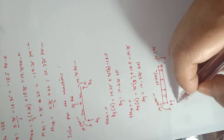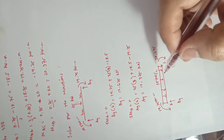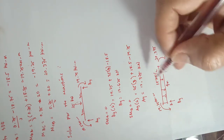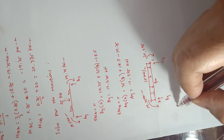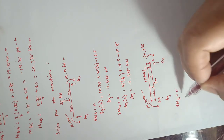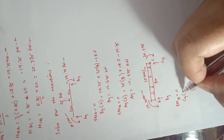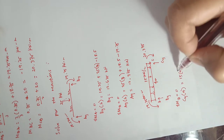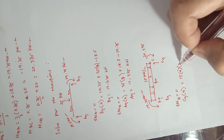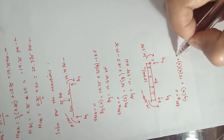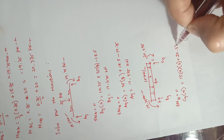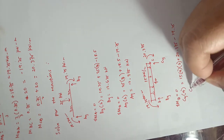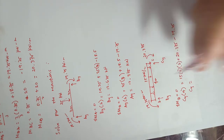Summing moments at B equal to zero on member BC, we solve for C_y. C_y times 4 equals 15 times 4 times the moment arm of 2, plus 20.375 minus 19.25. Solving, C_y equals 30.28125 kilo-newtons.